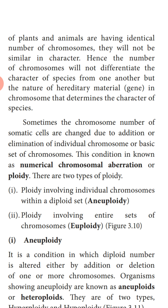There are some species of plants and animals which have the same number of chromosomes, but this does not mean these organisms will have the same character. The character of the organism is determined by the genes present in those chromosomes. Sometimes the chromosome number of somatic cells is changed due to the addition or removal of an individual chromosome or a basic set of chromosomes. The basic set means the haploid set — in somatic cells we have the diploid number, so half a set, the haploid set, can be added or removed.